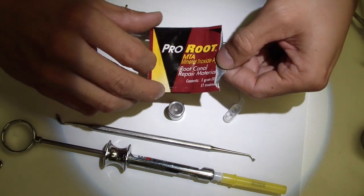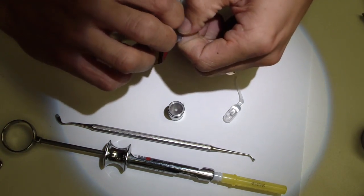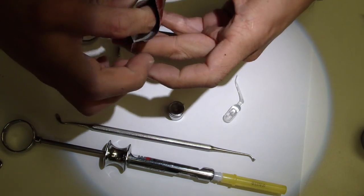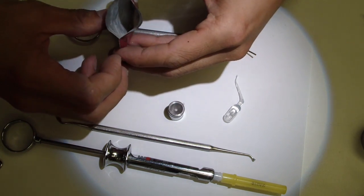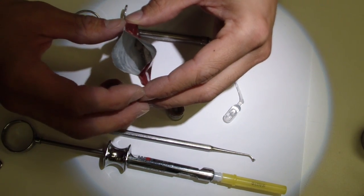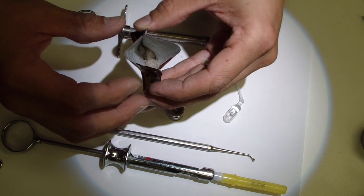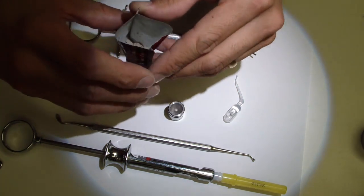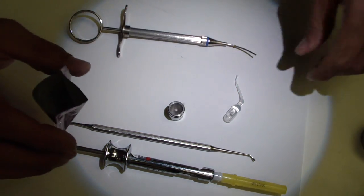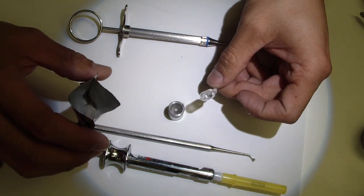So MTA typically comes in gray and white form. Here it is in the powder, let's see it in the container, there it is. And in the box container itself, the manufacturer sends sterile water.